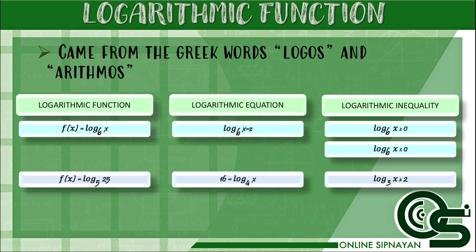A logarithmic function is represented as f of x is equal to logarithm of x with base b, wherein f of x or y is the exponent and b is the base, and x is the argument. A logarithmic equation is represented as logarithm of x with base b is equal to z. And for logarithmic inequality,